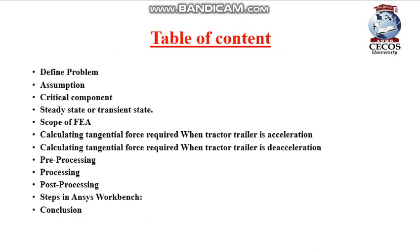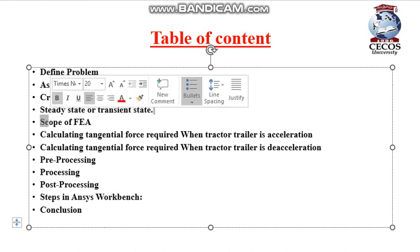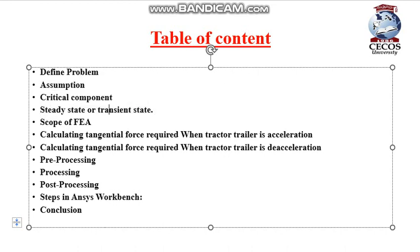This is our table of contents. First, we have to define the problem. Then we do some assumptions, then identify the critical component of our knuckle joint. After that, we determine whether the analysis is steady state or transient state, and then we define the scope of FEA — why FEA should be done on this part.